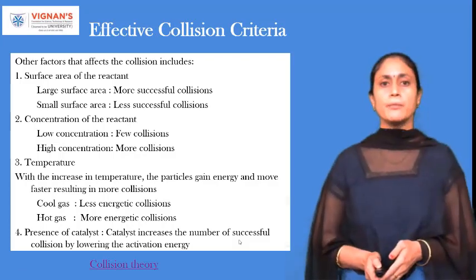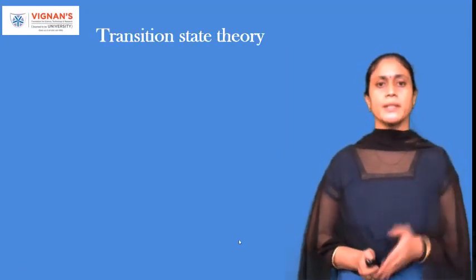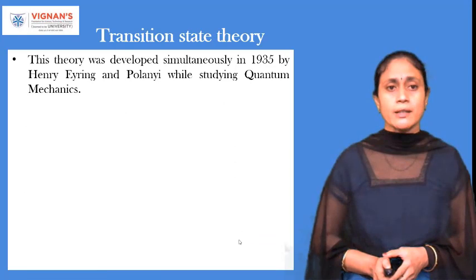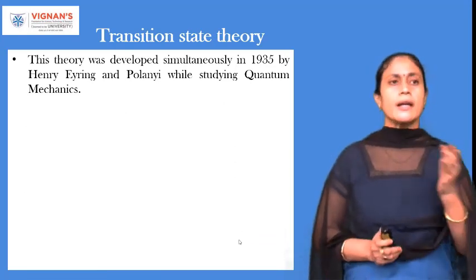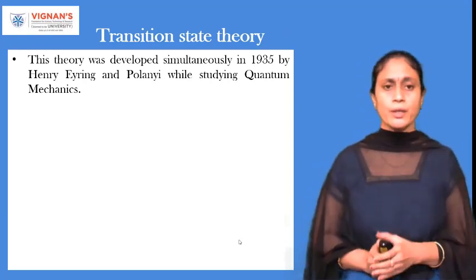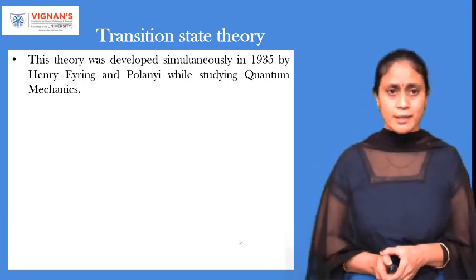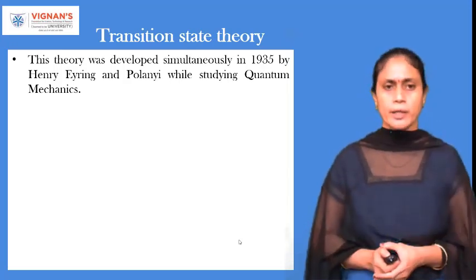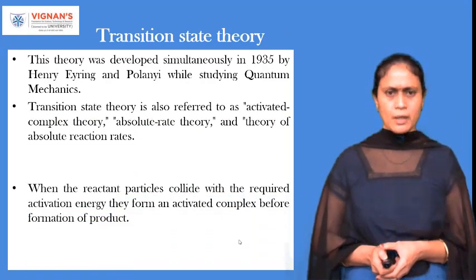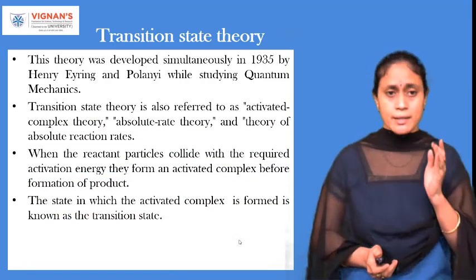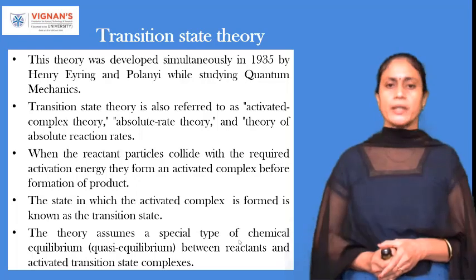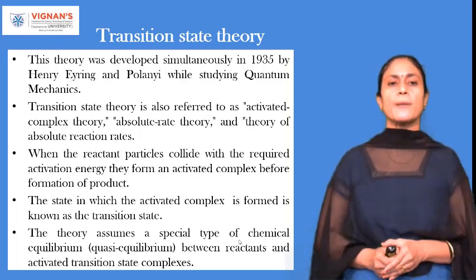Now we will move towards another theory: transition state theory. We have to first learn who proposed this theory — it was Eyring as well as Polanyi, who worked simultaneously on quantum mechanics to give us this theory. Transition state theory is also referred to as activated complex theory, absolute rate theory, and theory of absolute reaction rates.